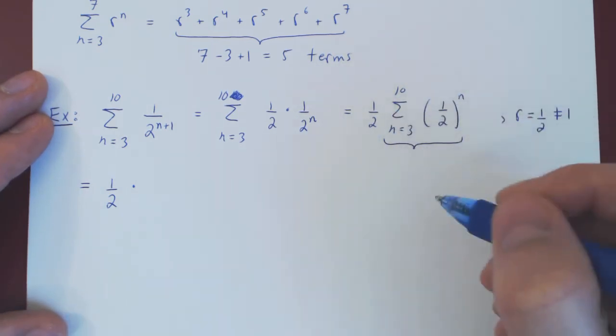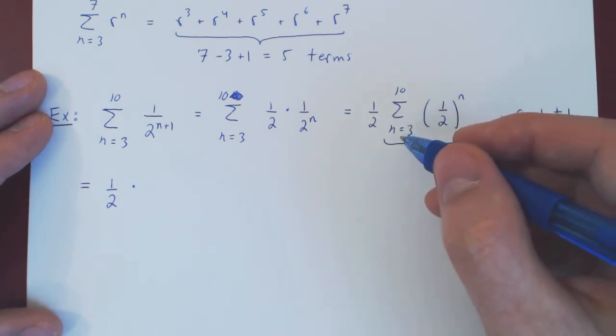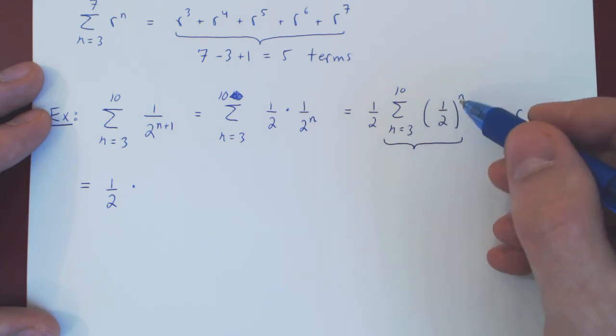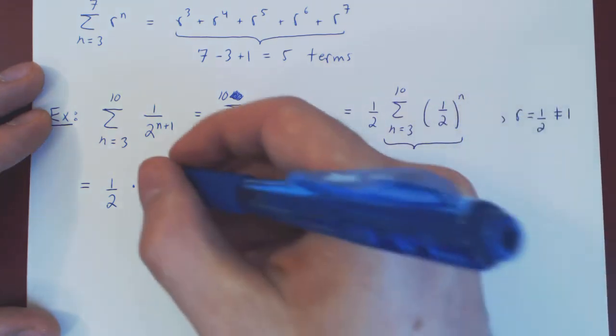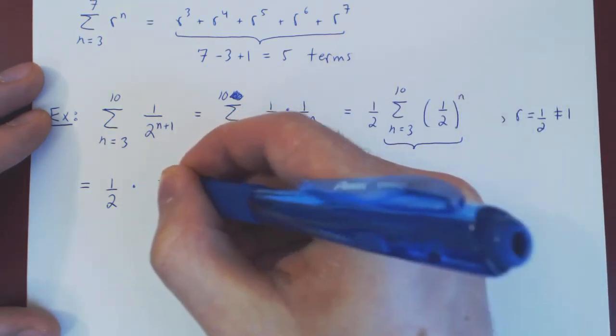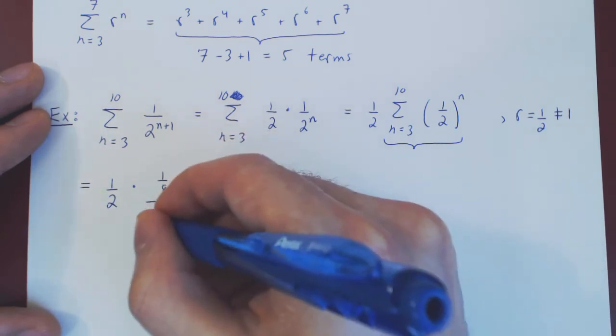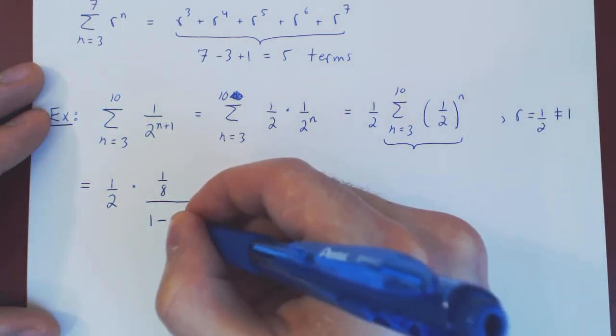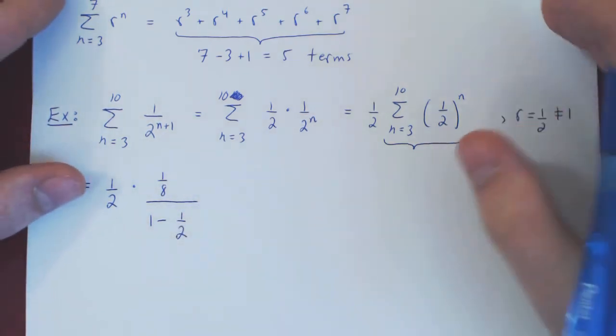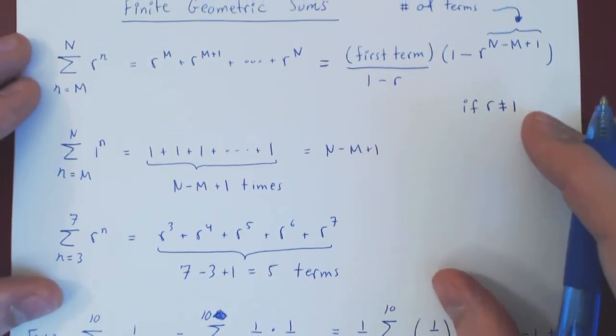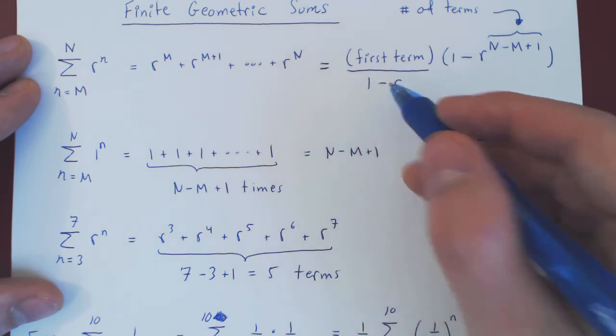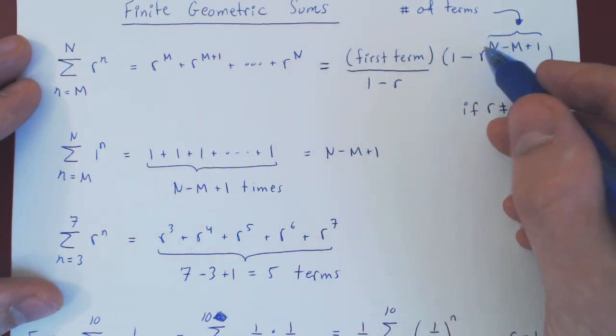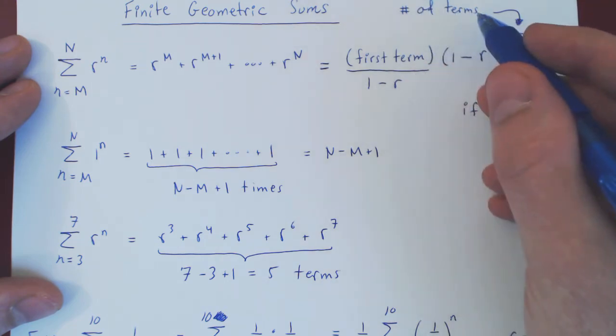And now we take care of the finite geometric sum. Again, the first half will be the first term. Well, the first term is when n is 3, so we'll have 1 over 2 cubed, that is 1 over 8, over 1 minus r, r is 1 half over 1 minus 1 half, but that's only half the formula.